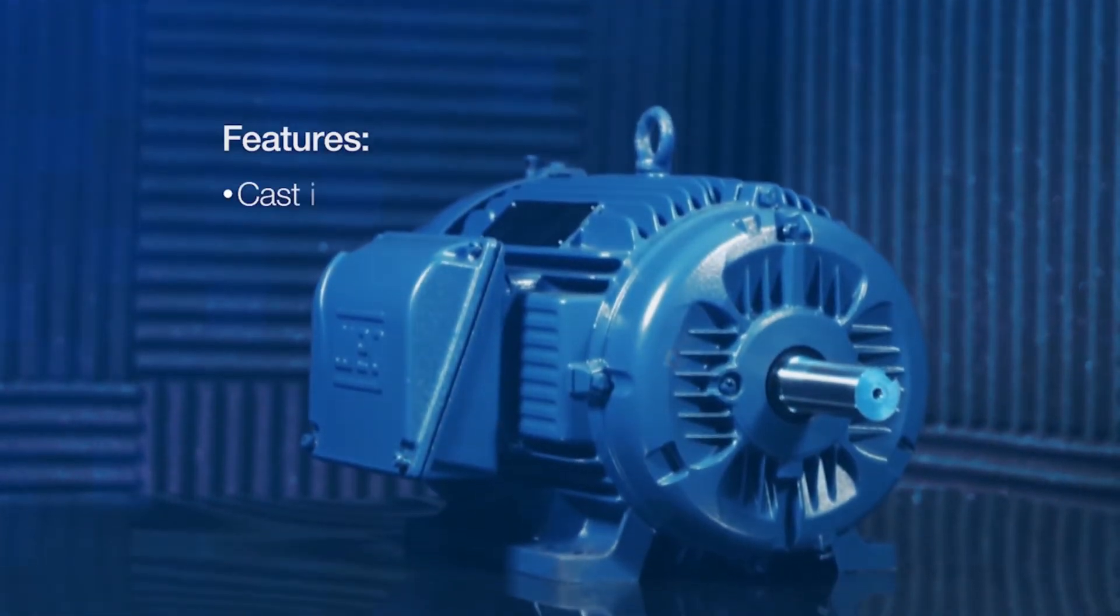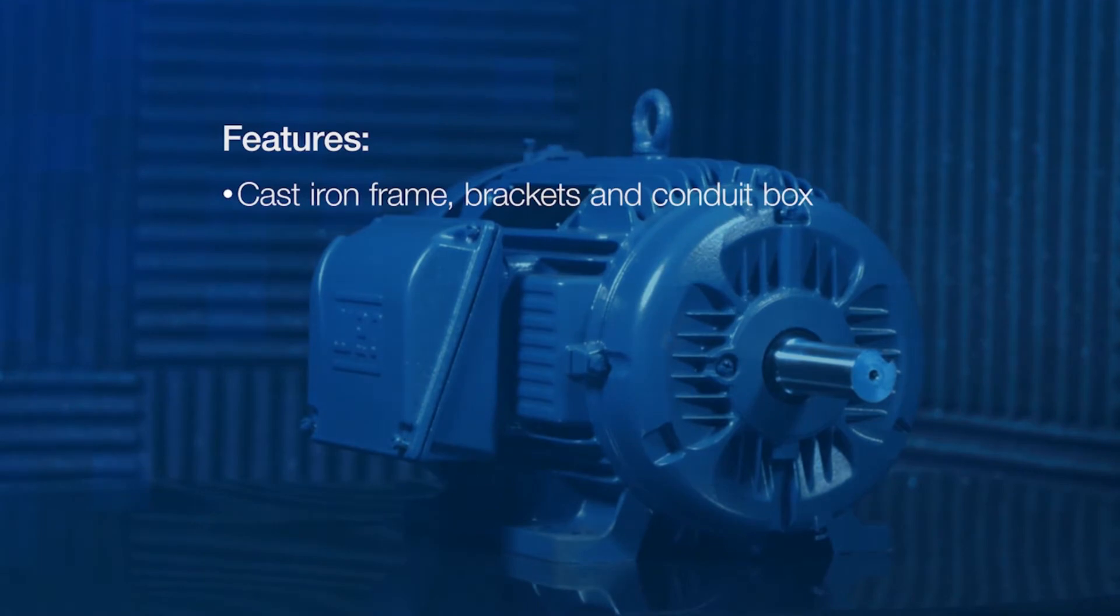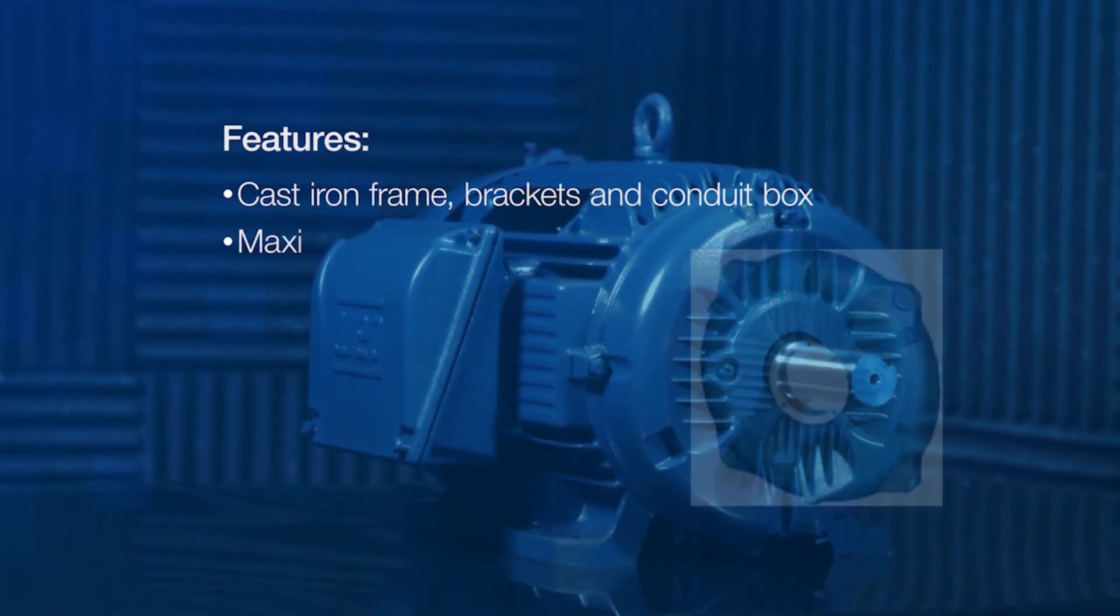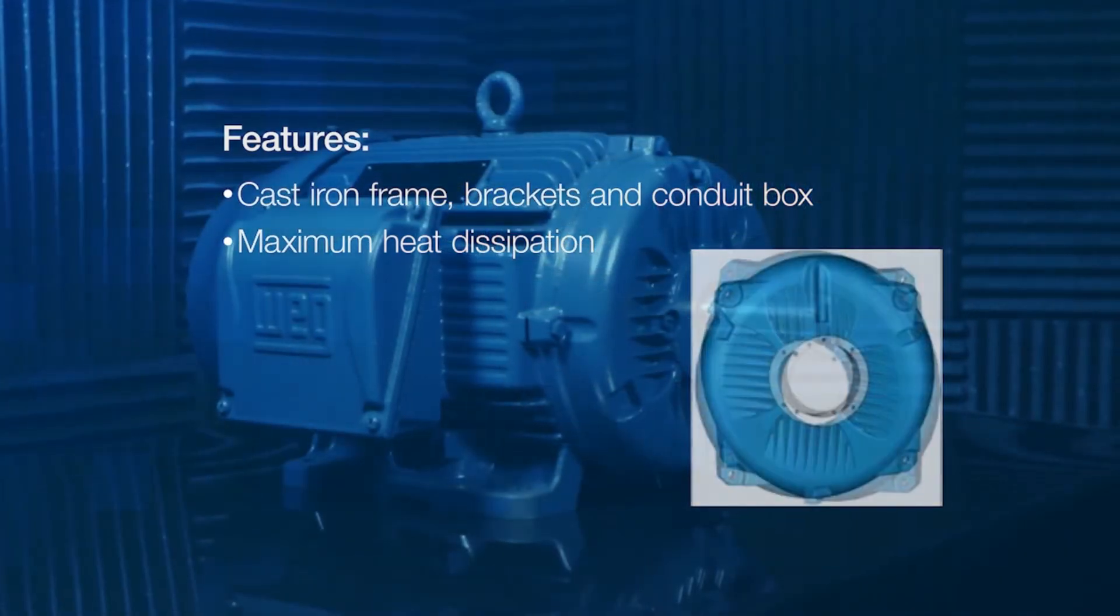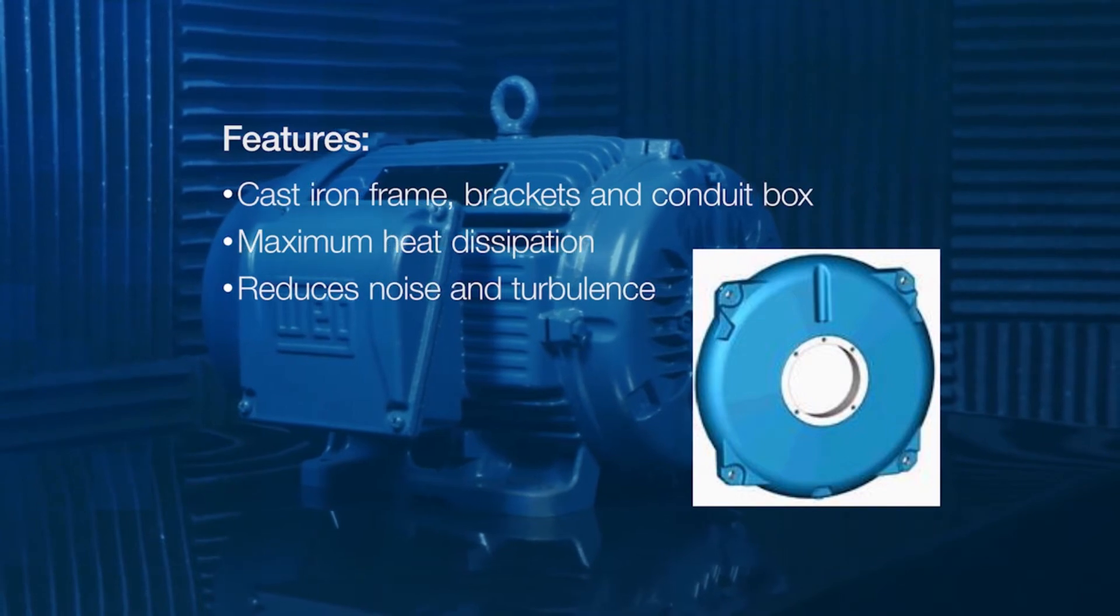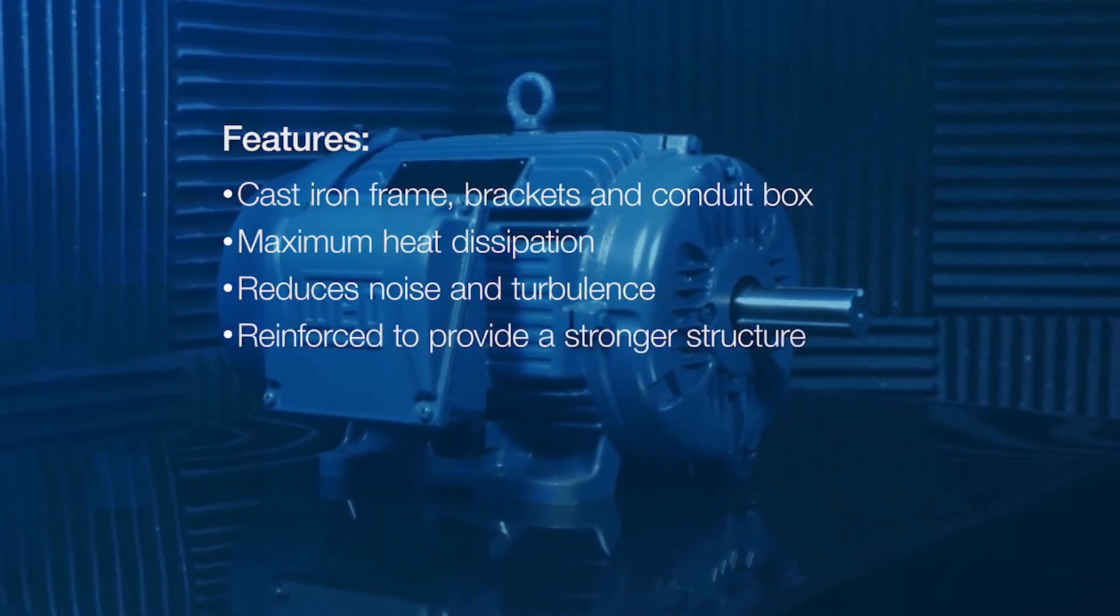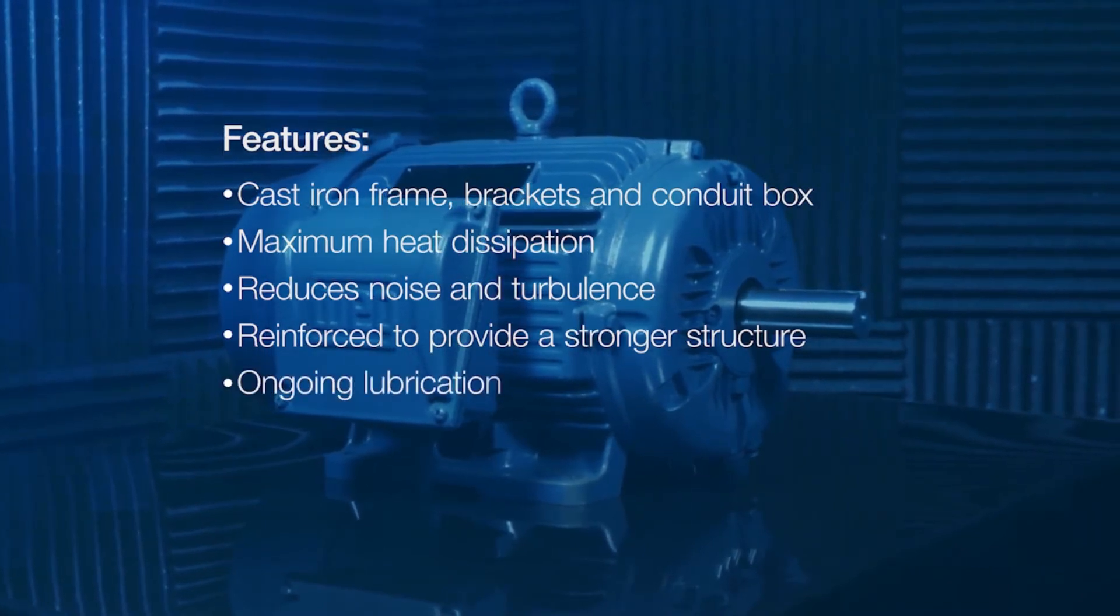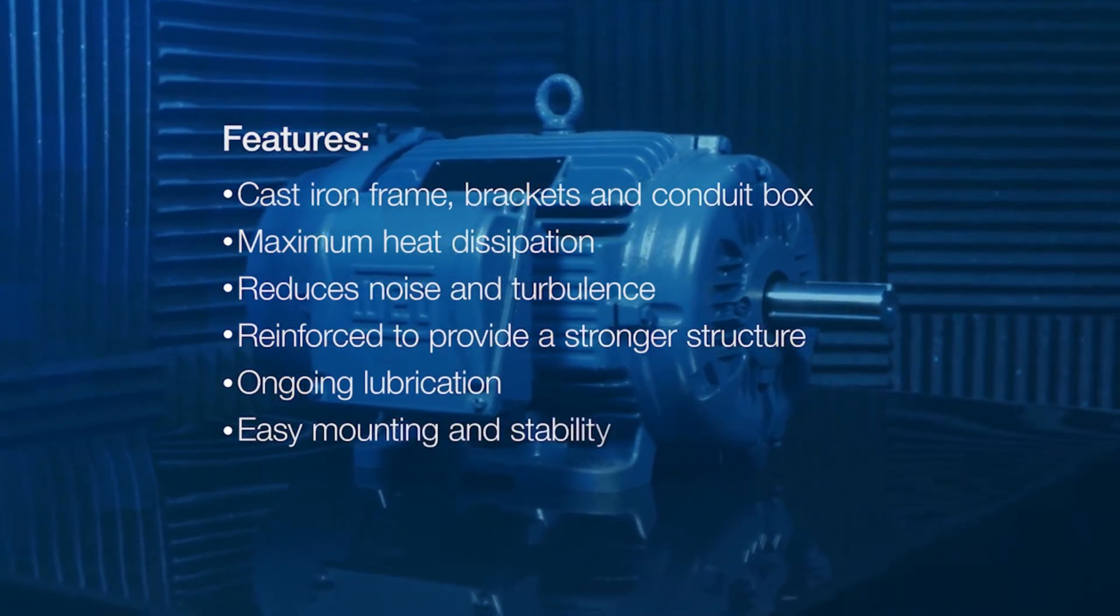Other features include an FC200 high strength cast iron frame, brackets and conduit box with a new end shield design. The drive end shield's fin design provides maximum heat dissipation, while the non-drive end shield's smooth area reduces noise. The bracket to frame bolt area is reinforced to provide a stronger structure. Integral grease channels contribute to ongoing lubrication. Solid feet mean easy mounting and stability in high vibration applications.